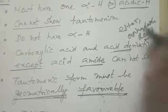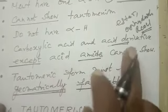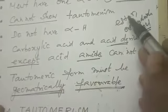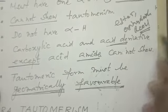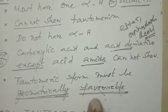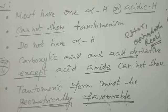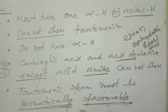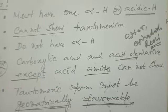Among the four derivatives, only amide shows Tautomerism. Ester and acid chloride are not showing keto-enol Tautomerism. This point is very very important. The last point is: the tautomeric form must be geometrically favorable — meaning after forming the isomerism, the product should be stable. Otherwise if it is not stable, the isomerism will not result.